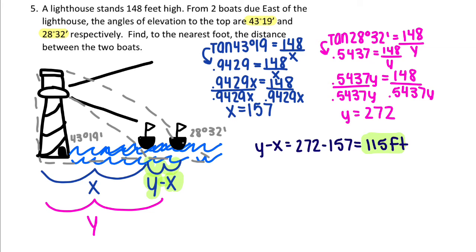Now let's solve for y. Tangent 28 degrees 32 minutes becomes 0.5437. Then you divide 148 by 0.5437 and you get y equals 272.